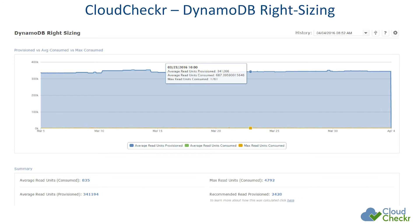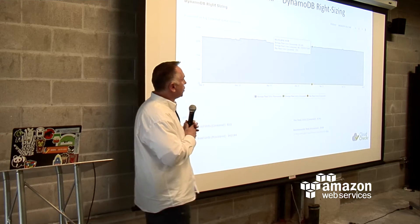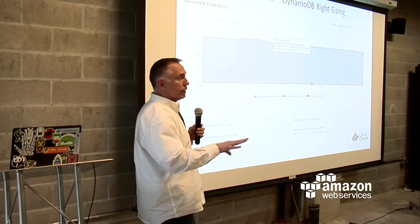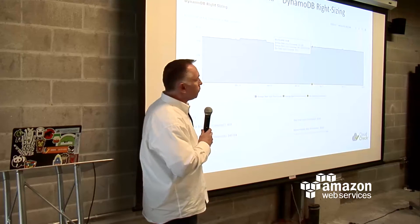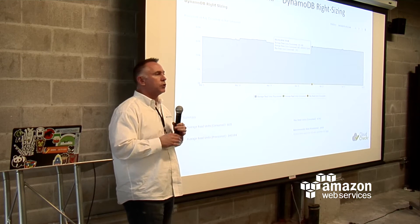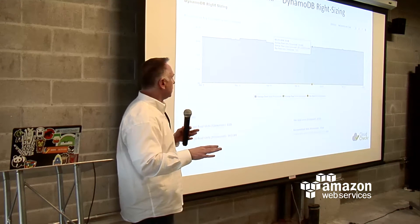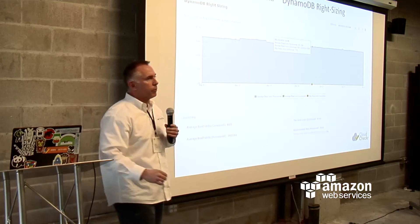You can see your average read provisioned is one thing, your average consumed is less than that, and then the max is higher. Usually you don't really want to provision more than your max — the idea is your max should be enough so that you never spike above it. So if you see the max line, you shouldn't be provisioning above that.